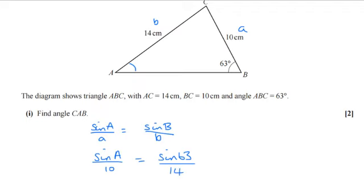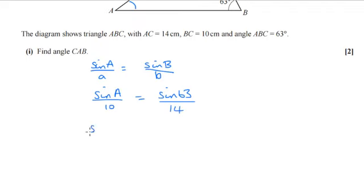So sine a is going to equal, if we times both sides by 10, it's going to equal 10 sine 63 over 14. And a will be the inverse sine of that. So you can do the inverse sine of all this, or you can work out this value and then do the inverse sine of that answer.